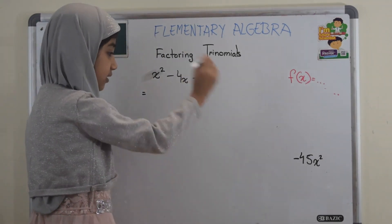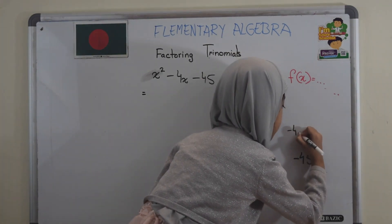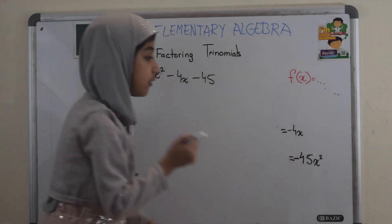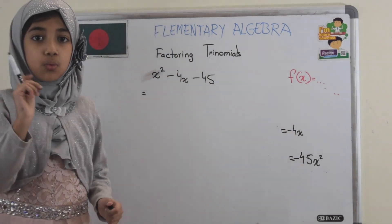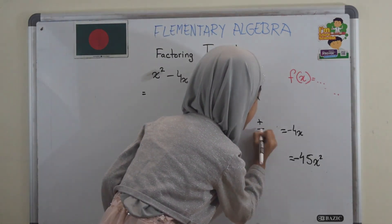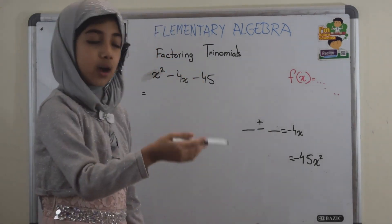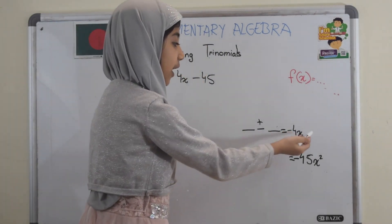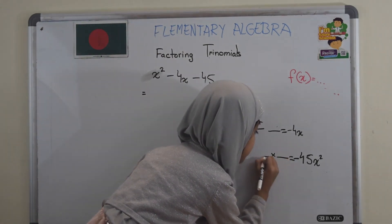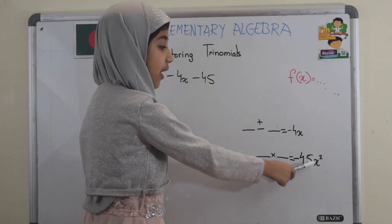Now we've got to leave the minus 4x on top, and now we've got to see which two numbers you can add or subtract and those two numbers will become the result in minus 4x. And the same two numbers when you multiply will become the result for minus 45x squared.